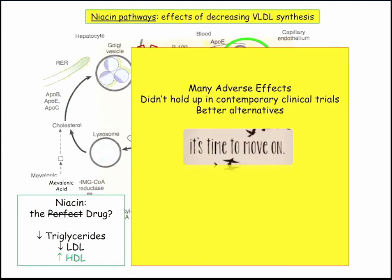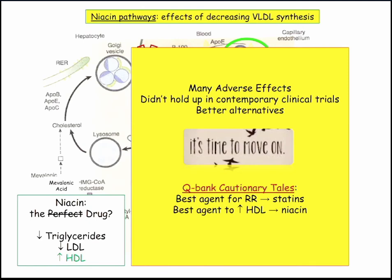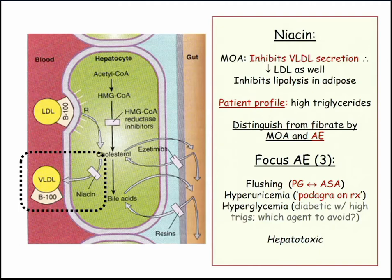Niacin will still hold on in question banks and the NBME because its side effects are great to test. If they ask the best agent to reduce risk in a patient who had a heart attack, it's statins — because of the clinical trials. If they ask the best agent to raise HDL, that's niacin. They're going to describe it as a drug that inhibits VLDL secretion and it'll be a high-triglyceride patient, but then they get into the adverse effects.